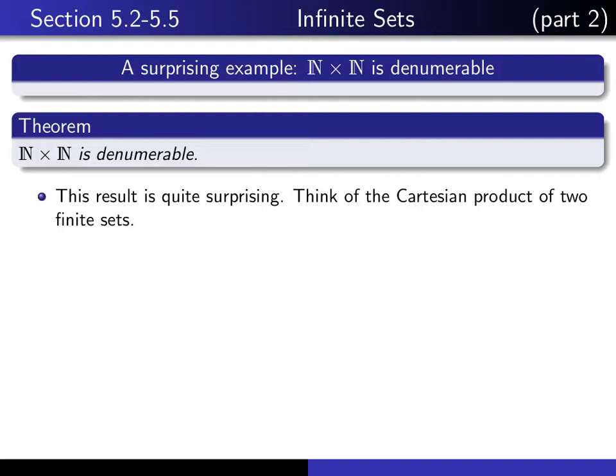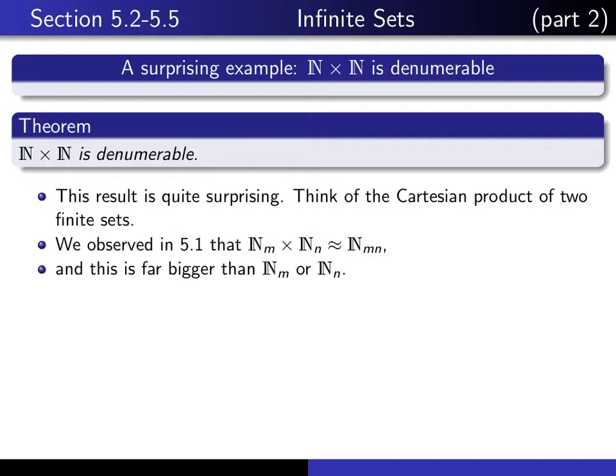Let's now compare that to what would happen when you take the Cartesian product of two finite sets. When you take the Cartesian product of n sub m with n sub n, we observed in section 5.1 that that has the same cardinality as n sub m times n. And that is a set which is far bigger than either one of these two factors.